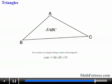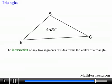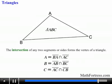Likewise, the intersection of any two segments or sides forms the vertex of a triangle and can be denoted using set notation as follows. Vertex A is equal to segment BA intersected with segment AC. Vertex B is equal to segment AB intersected with segment BC. And vertex C is equal to segment AC intersected with segment CB.